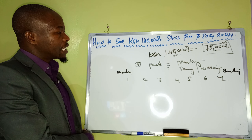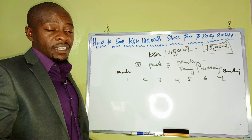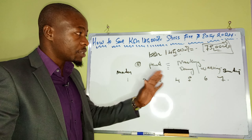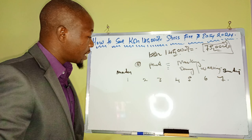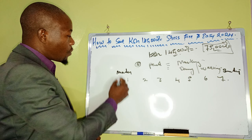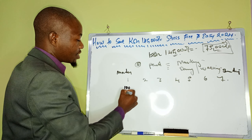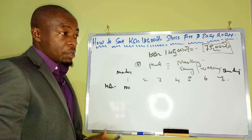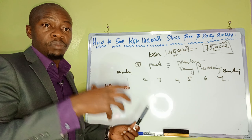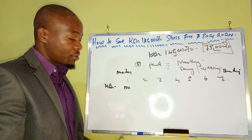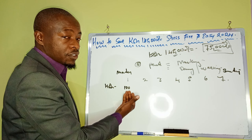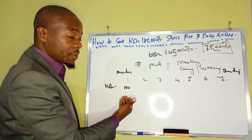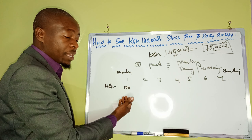Let's say you get paid daily, since most people who watch my videos get paid daily. On day one — Monday — you save 100 Kenyan shillings. Just 100. If you're working in dollars, maybe 5 or 10 is applicable, since 100 shillings is less than a dollar at the current rate of around 162 shillings to the dollar.